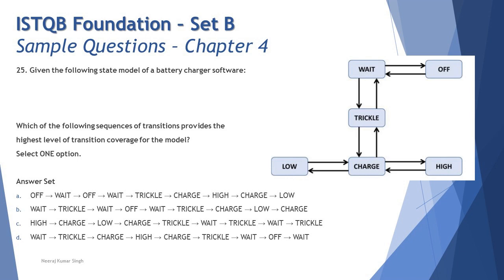Number C: High to Charge (1), Charge to Low (2), Low to Charge (3), Charge to Trickle (4), Trickle to Wait (5), Wait to Trickle which is reverse (6), and that's getting repeated. Totally six transitions out of 10 are only covered here.